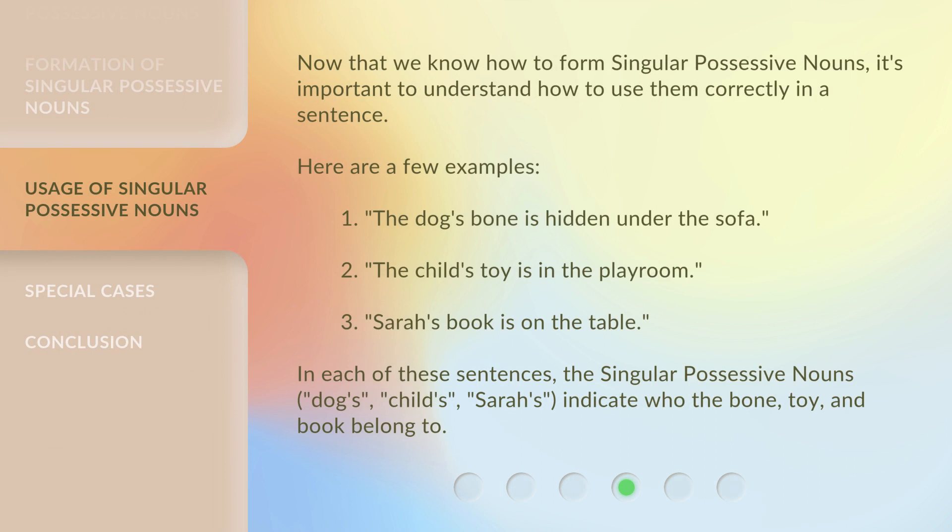Now that we know how to form singular possessive nouns, it's important to understand how to use them correctly in a sentence. Here are a few examples. In each of these sentences, the singular possessive nouns — dog's, child's, Sarah's — indicate who the bone, toy, and book belong to.